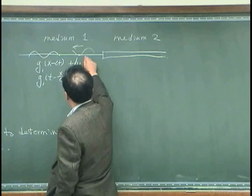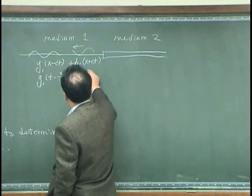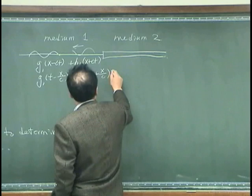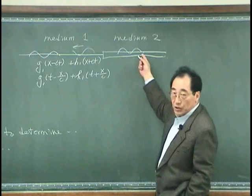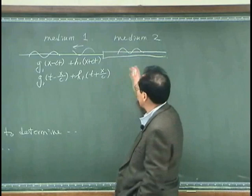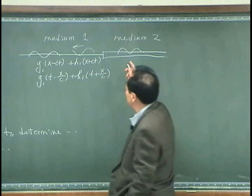And that can be H1, T plus x over C. And then the wave that is possible on this medium 2 would be only a right-going wave because there is no termination over here.